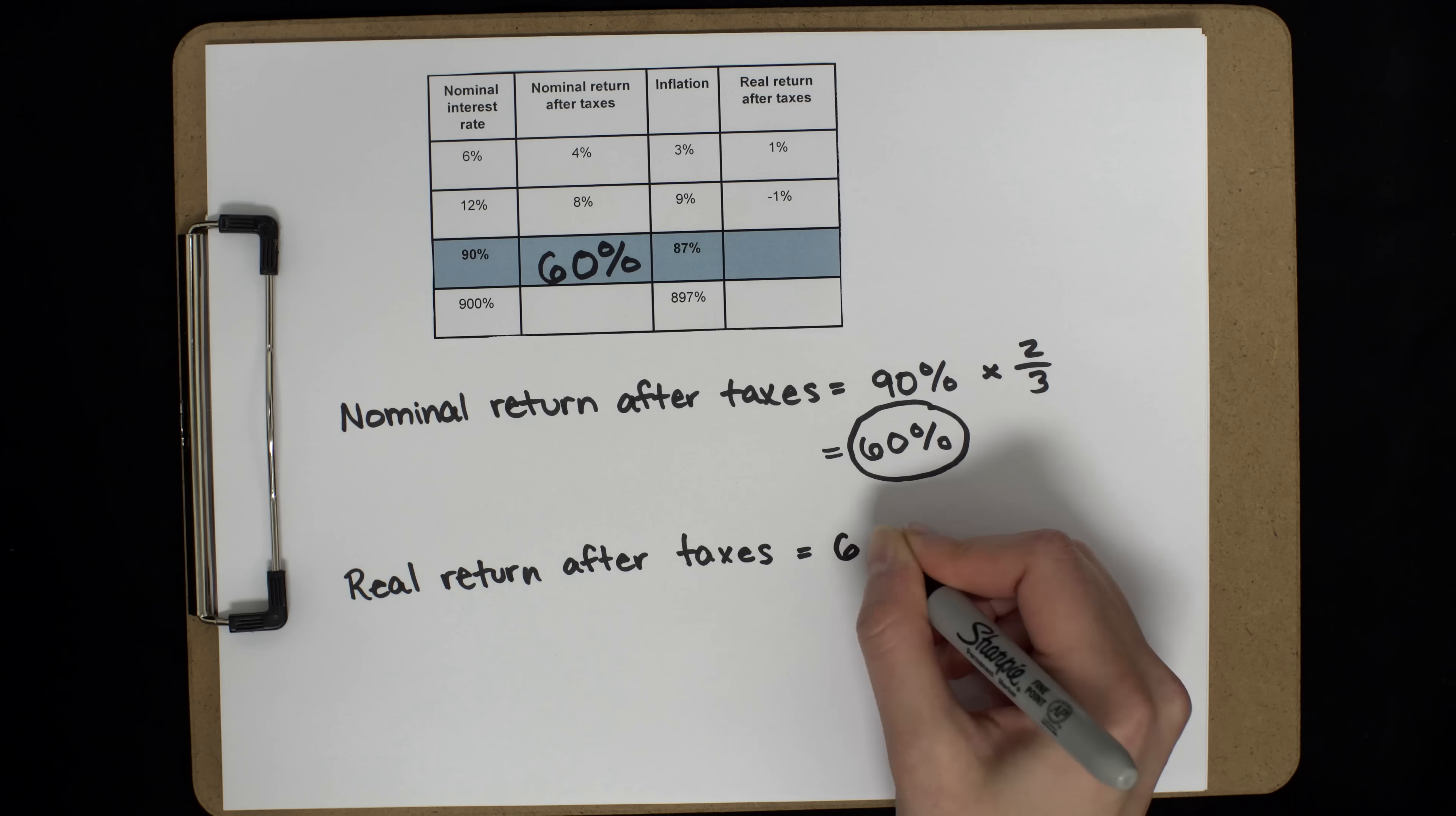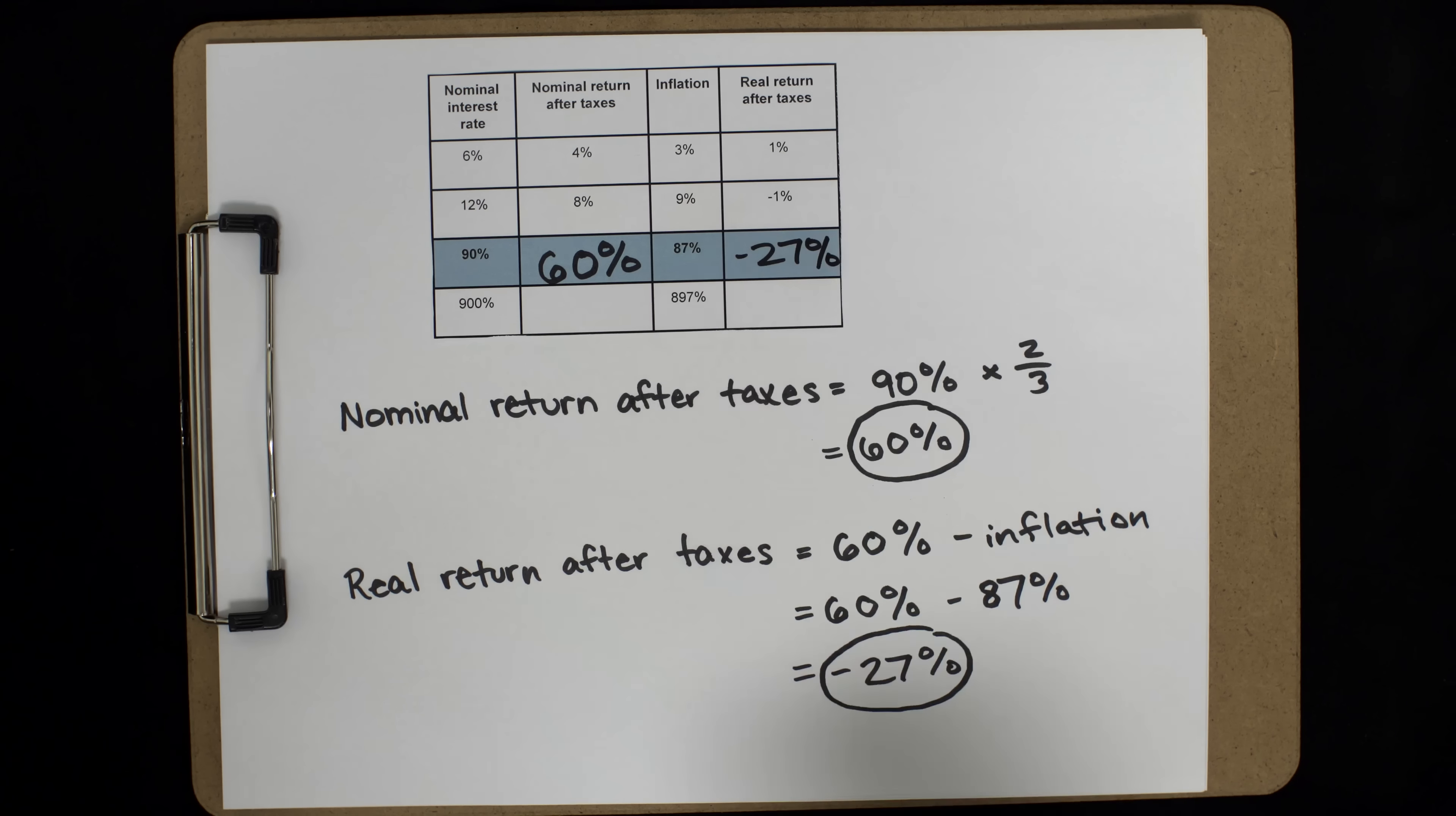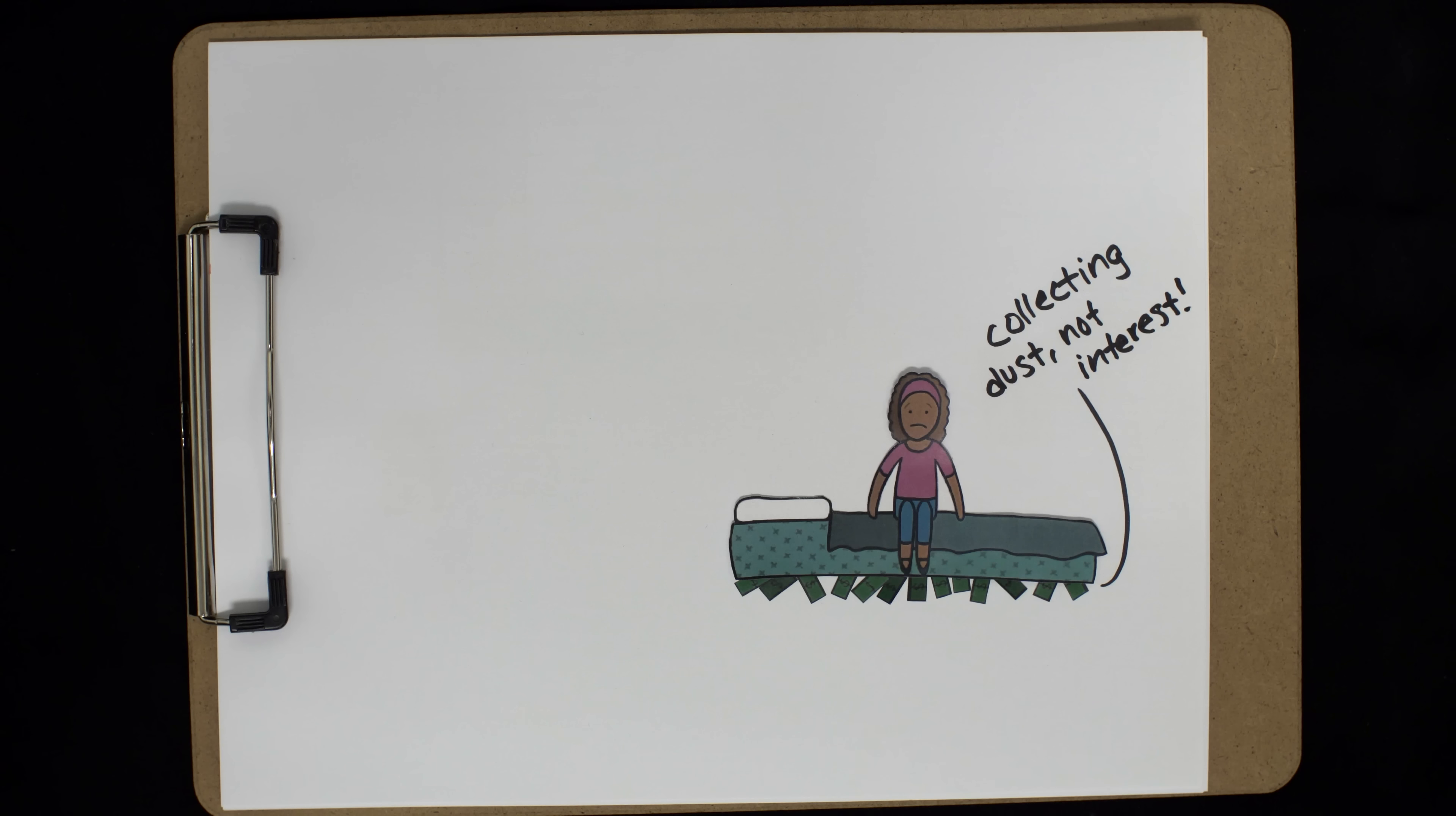60% minus inflation, which is 87%, equals negative 27%. Would you invest in a company that offered you a negative 27% rate of return? No! So why would you put your money in a savings account with similar results? And keep in mind, just sticking your money under your mattress is even worse, because then you wouldn't be earning any interest, so you would lose even more in real terms.